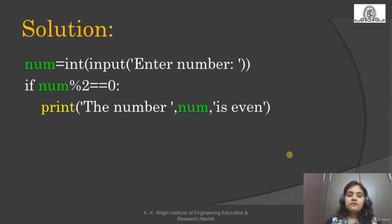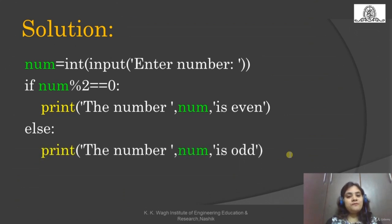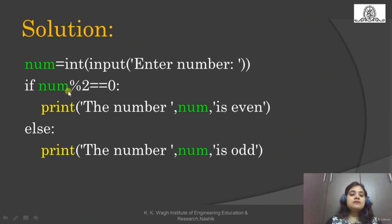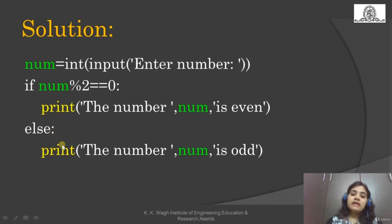So we check: if num % 2 == 0: print('The number', num, 'is even'). Else: print('The number', num, 'is odd'). Here we use the else operator — if the condition is not satisfied, the else block executes. Let us run this in Python: num = int(input('Enter a number')). Entering 52 gives 'The number 52 is even'.